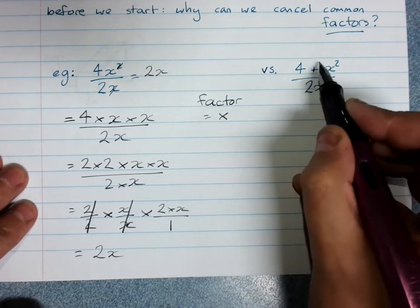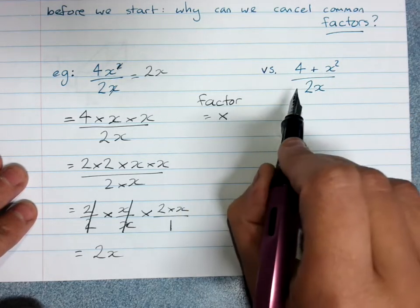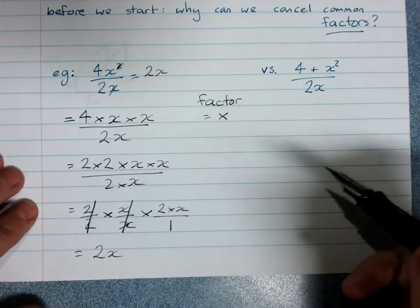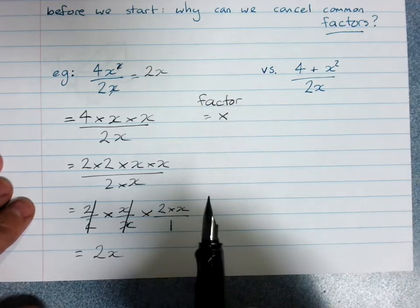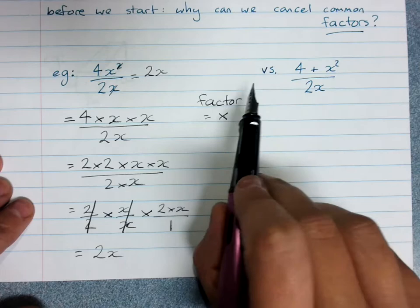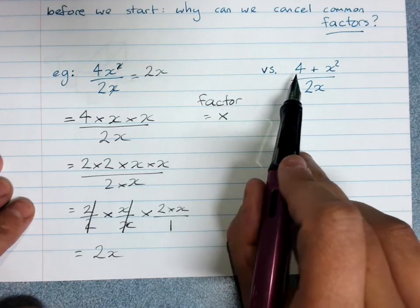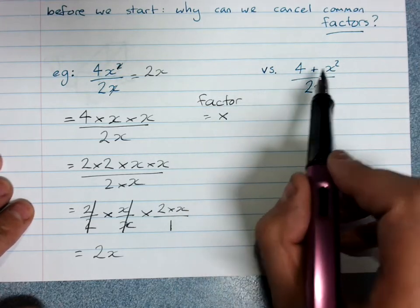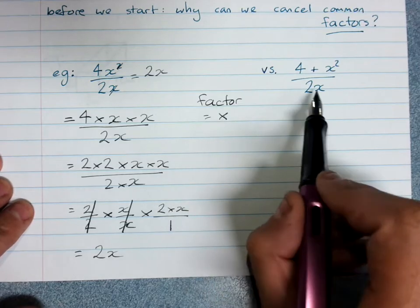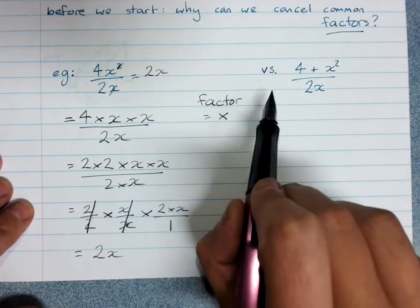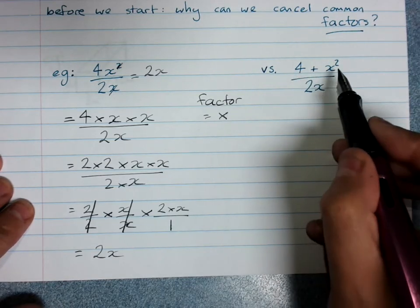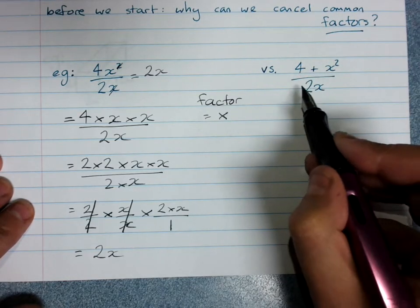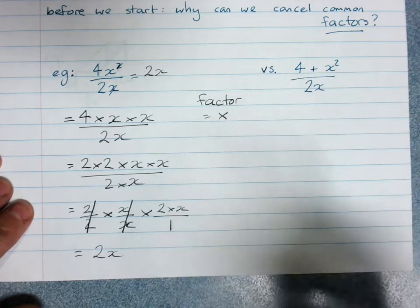So this I cannot simplify. And if there's a plus or a minus in your fraction, be very careful about whether or not you're allowed to cancel, because we only cancel common factors. Eventually, we might learn to factorize and see if we could factorize and thus get a factor. But I set this up so we can't do that, and we won't learn that just yet. So this can't be simplified, because x or 2 are not factors of that expression.